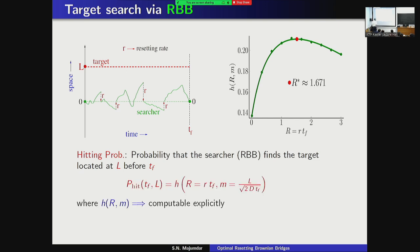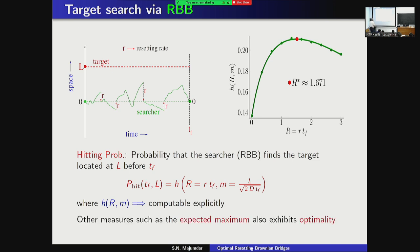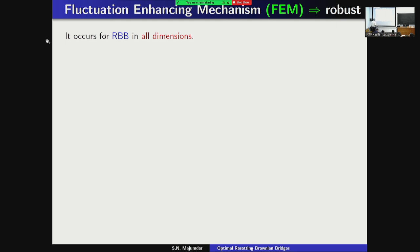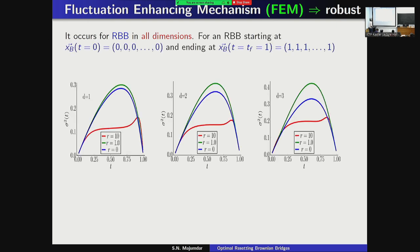The hitting probability — the probability the target is found within fixed time tf — can also be computed explicitly, and again there is an optimal r* at which it is maximized. The expected maximum of the process also shows the same phenomenon. This occurs in all dimensions d=1, 2, 3: in every case the fluctuations first increase with resetting rate and then decrease, always with the same fluctuation-enhancing mechanism. The optimal r* value differs depending on which observable you look at, but the existence of an r* is universal.